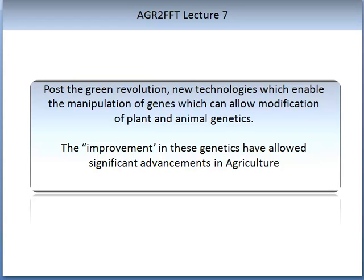Biotechnology can make this progress more precise and less time-consuming. We have learnt in previous lectures about the Green Revolution. After the Green Revolution, new technologies which enabled the manipulation of genes, which can allow modification of plant and animal genetics, were developed further. This allowed the improvement of these genetics, and this has the potential to offer significant advances in agriculture.